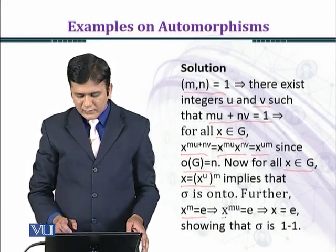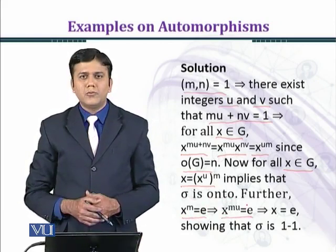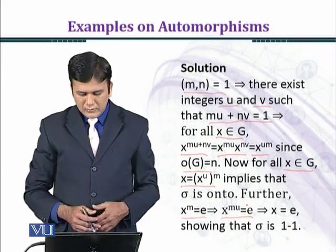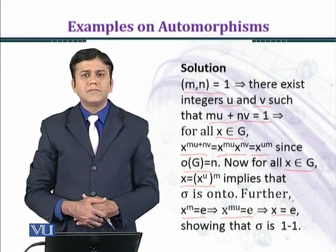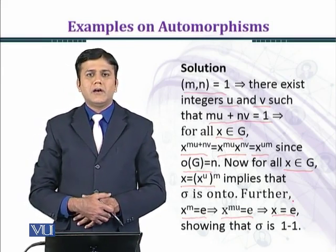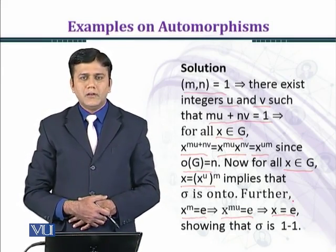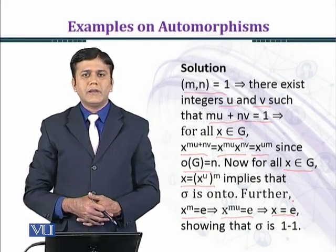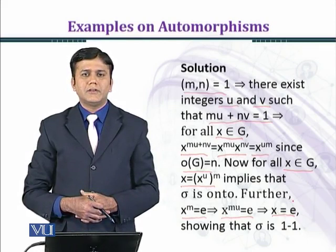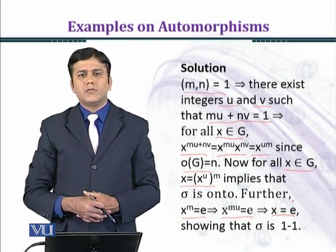Further, x^m = e implies x^(mu) = e implies x = e, showing that sigma is 1-1. So if we have a kernel and in the kernel we have one element, the identity element, then the mapping is one-to-one.